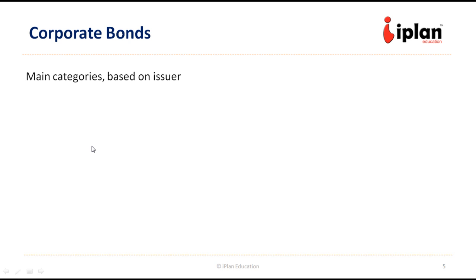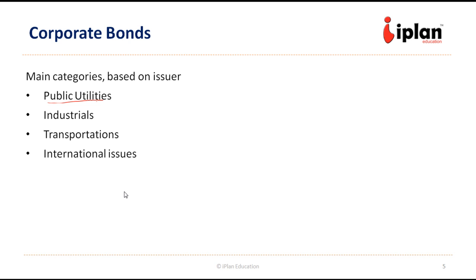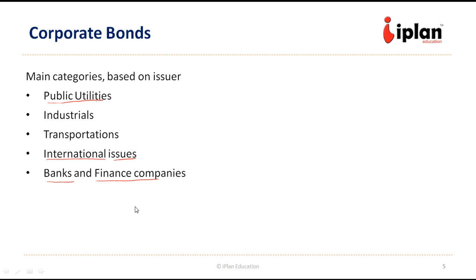In the United States, there are broadly five categories of corporate bonds based on the type of issuer: public utilities, industrial, transportation, certain international issues such as Yankee bonds, and banks and financial companies.